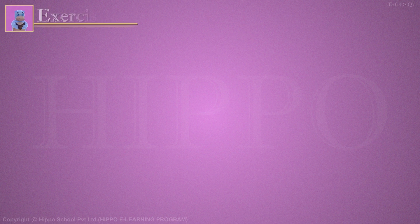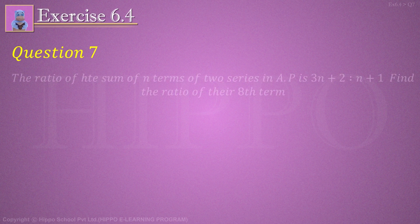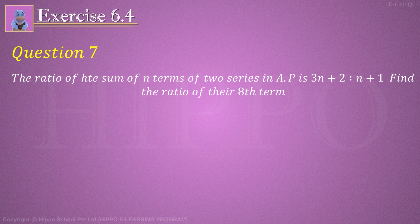Exercise number 6.4, Question number 7. The ratio of the sum of n terms of two series in A.P. is (3n + 2) : (n + 1).